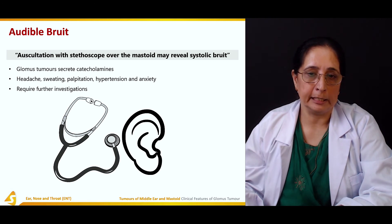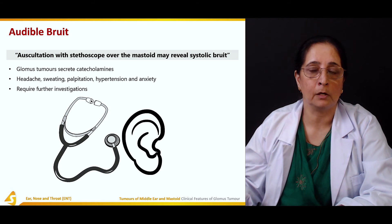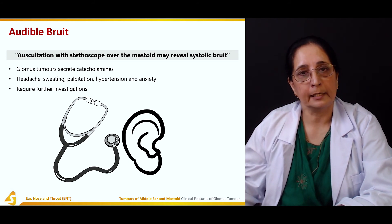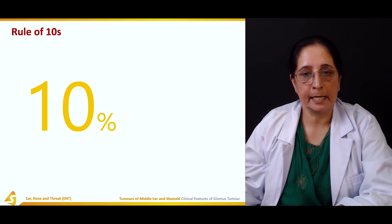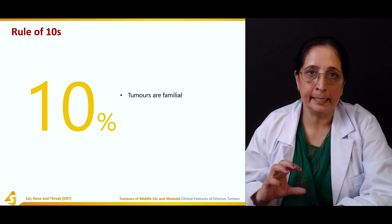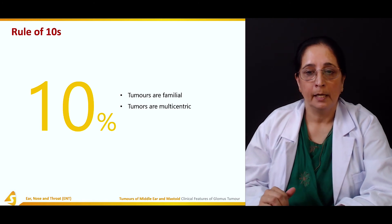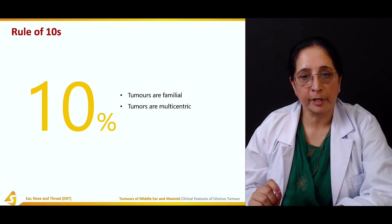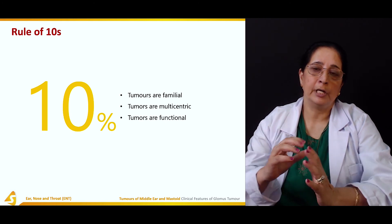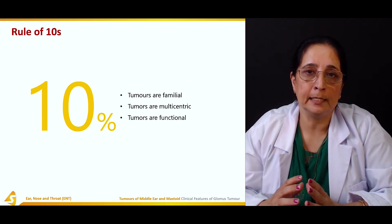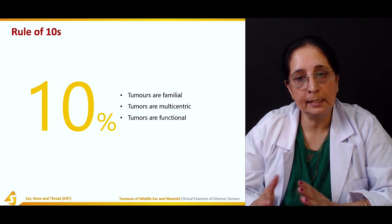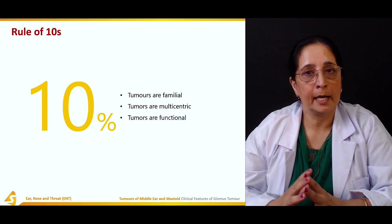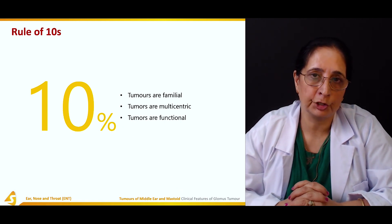Further investigations are required including tests for catecholamine levels. The rule of 10s applies to glomus tumors: 10% of tumors are familial in nature, 10% are multicentric, and 10% are functional in nature.